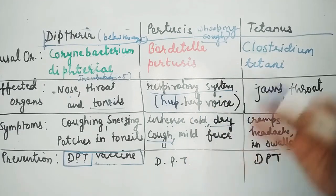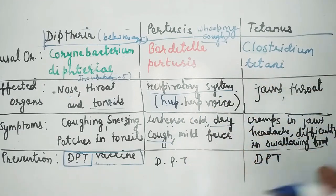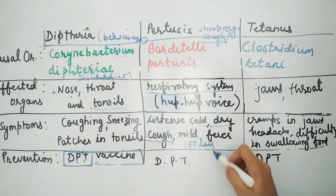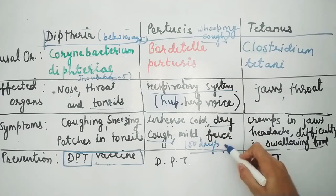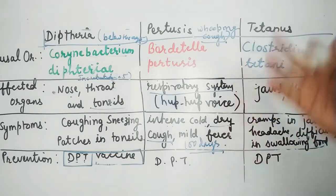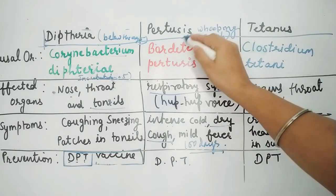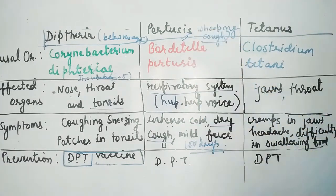The cough can last for about 100 days. If it continues, it can lead to complications such as pneumonia and TB. If the coughing persists, there is a chance of pneumonia and TB developing.